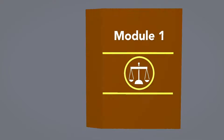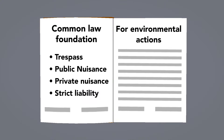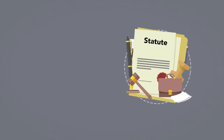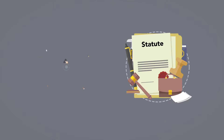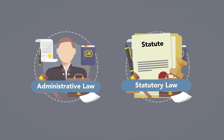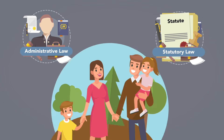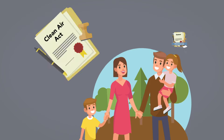Conclusion. This module laid out the common law foundation for environmental actions based on trespass, public nuisance, private nuisance, and strict liability. Next, we'll focus on statutory and administrative laws developed to protect human health and the environment, starting with the Federal Clean Air Act and its implementing regulations.